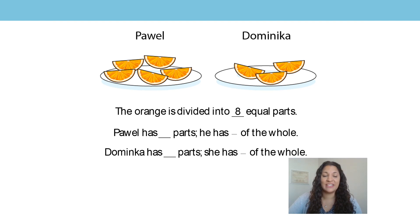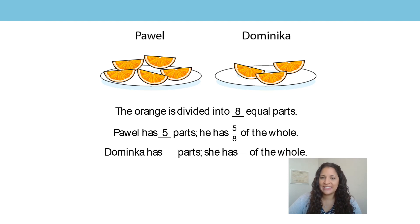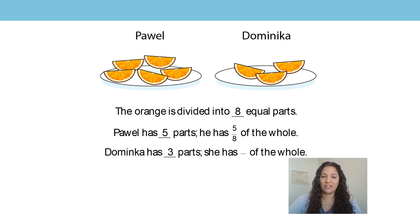Powell has 1, 2, 3, 4, 5. Powell has 5 parts. He has 5 eighths of the whole. So Powell has 5 eighths of the whole orange. Now let's have a look at what Dominica has. Dominica has 3 parts. She has 3 eighths of the whole orange.